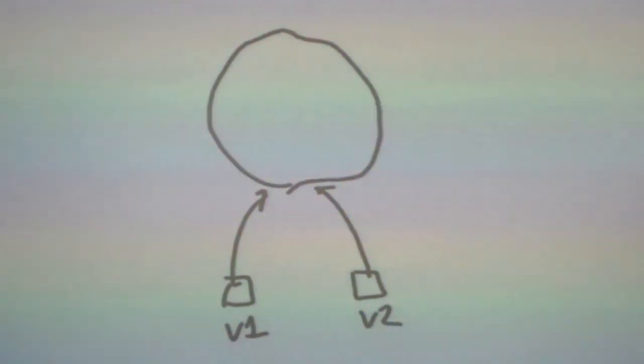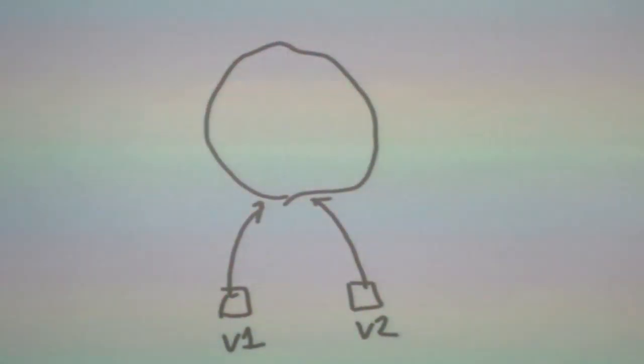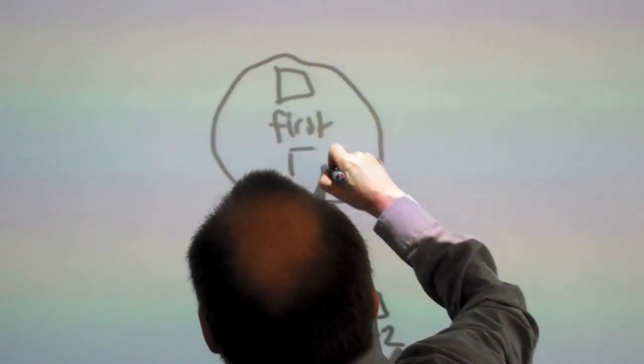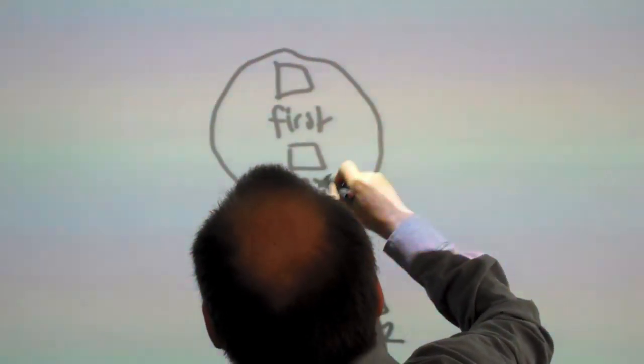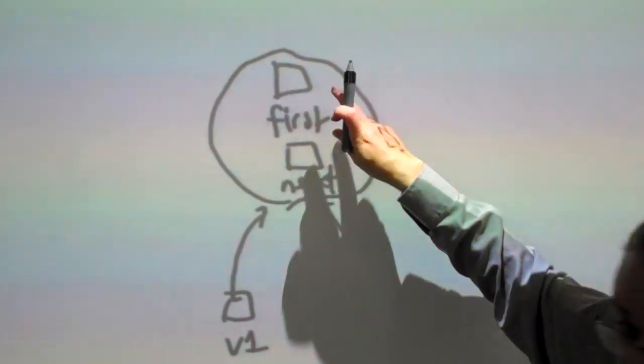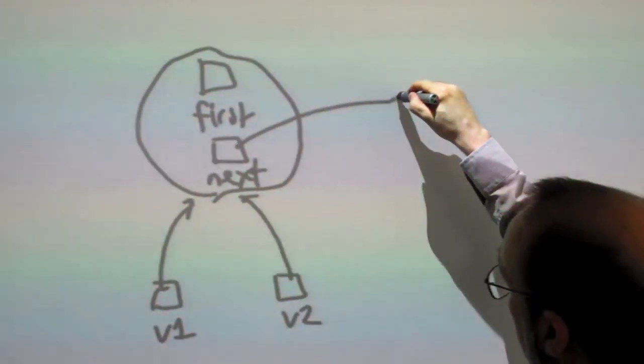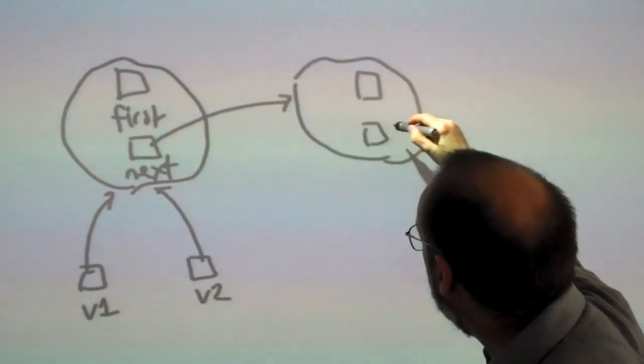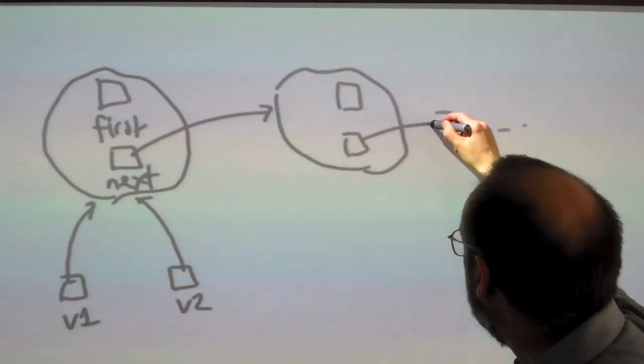Now if it's a cell object, it's got two fields inside it: the first and the next. And the first holds the data and the next, as you know, refers to another cell object. And that's how we make a linked list.